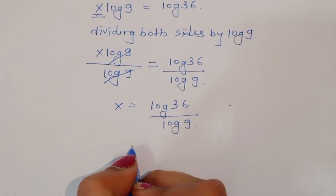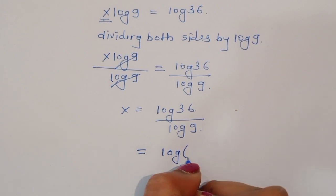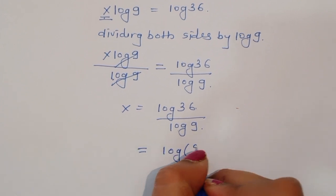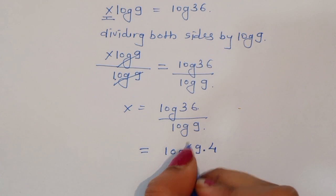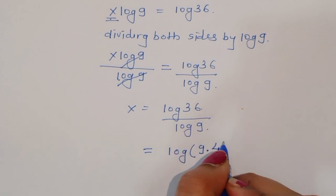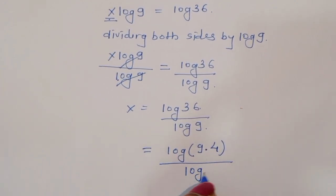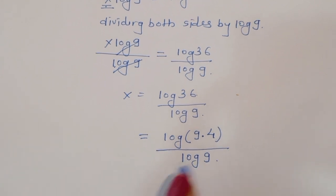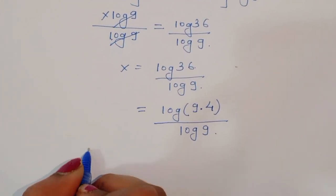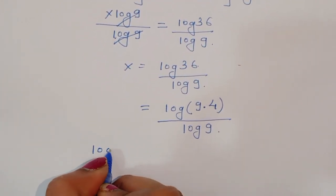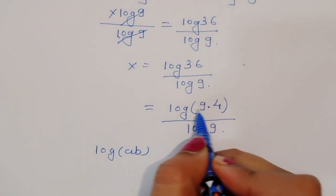Now, 36 we can write as 9 times 4. So x is equal to log of 9 times 4 divided by log of 9.